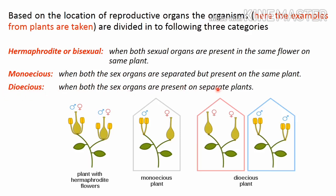The third category is dioecious — when both sex organs are present on separate plants or separate individuals. As we know, in human beings there are two different sexes, male and female, so human beings are an example of a dioecious organism. This figure shows two plants as examples of dioecious plants: one plant has female flowers only and the other has only male flowers.